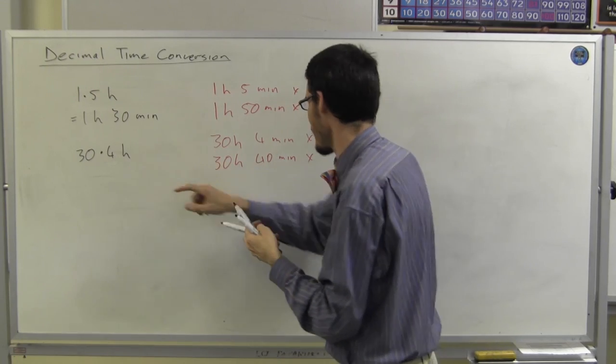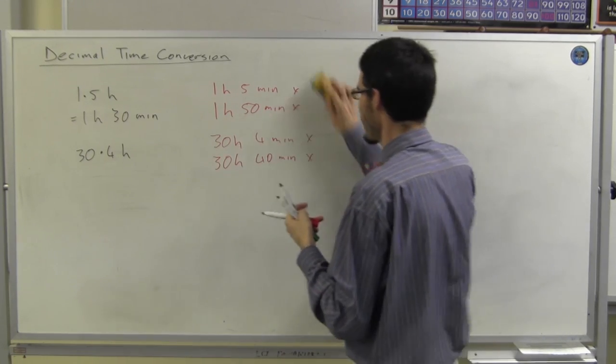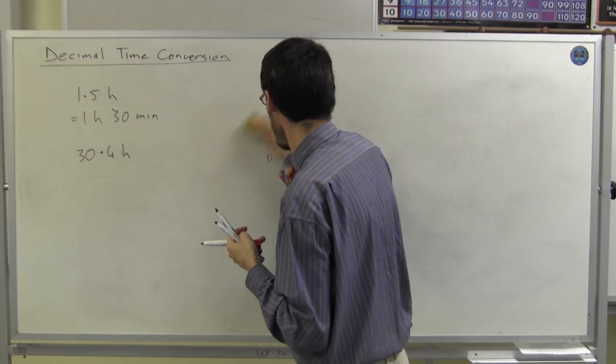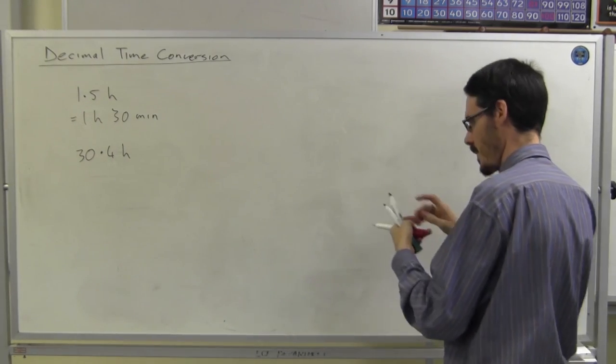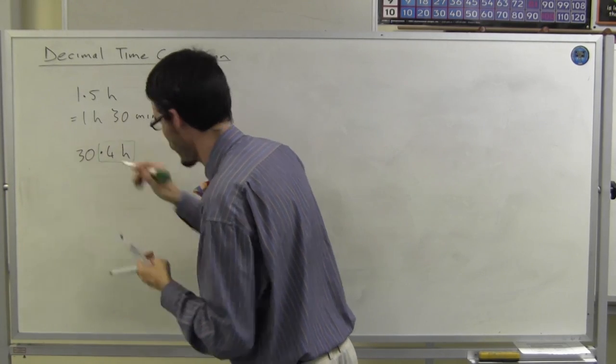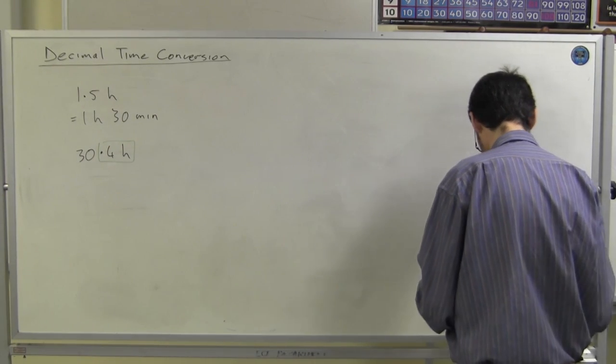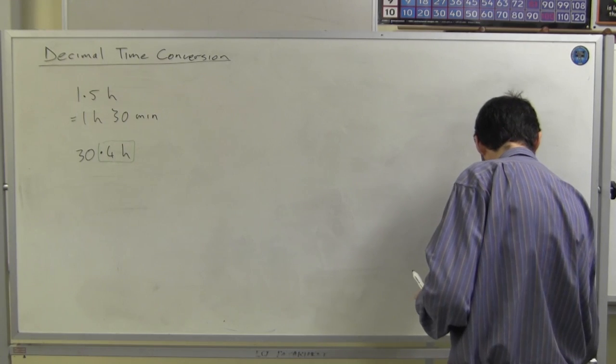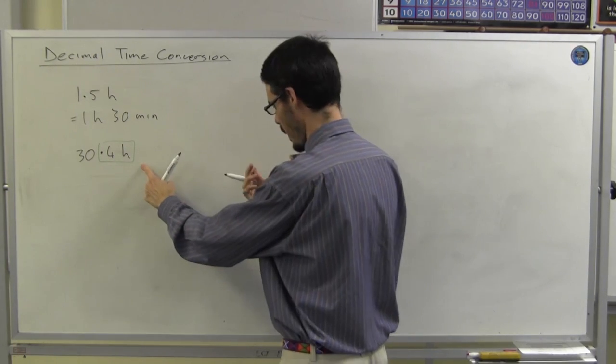To work this out, we can't do it this way. It doesn't work. What we have to do is have a look at this 0.4. It's 0.4 of an hour. Well, how many minutes is that? 0.4 multiplied by 60 minutes in an hour.